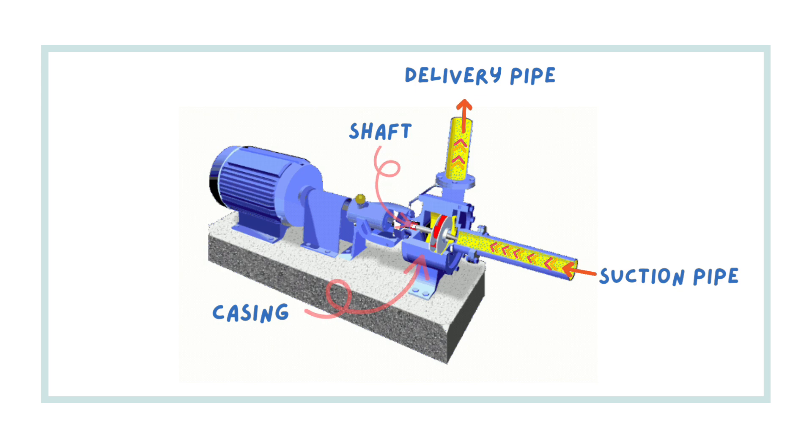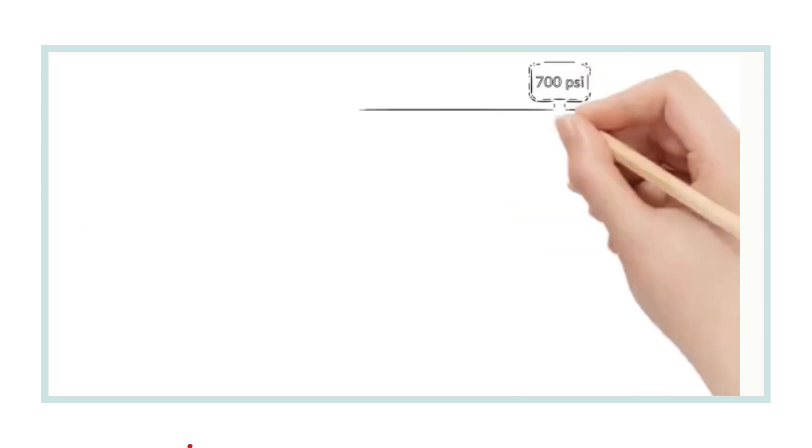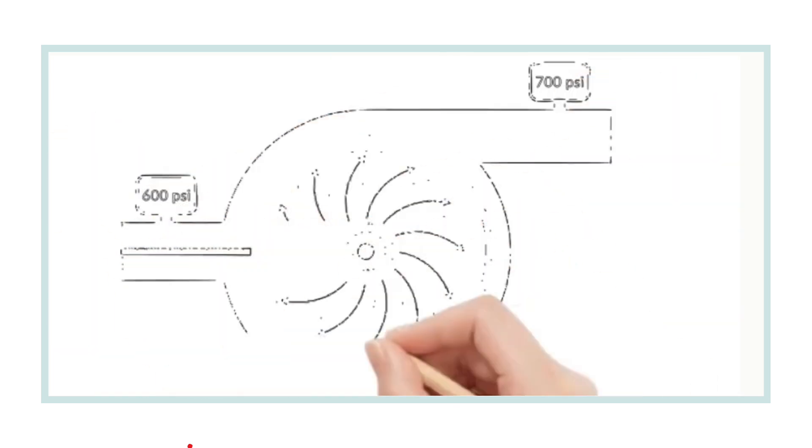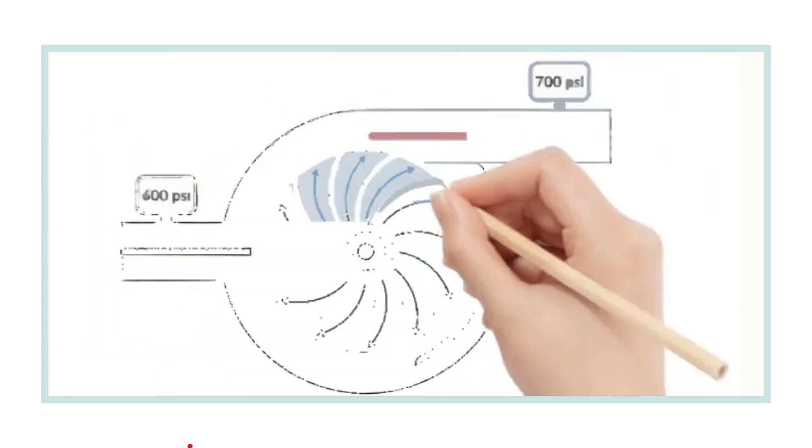If you want to run the impeller, if you want to rotate the impeller, then it needs a motor. What is a motor? A motor is a prime mover which drives the entire process. I hope you understood about the components of the centrifugal pump.